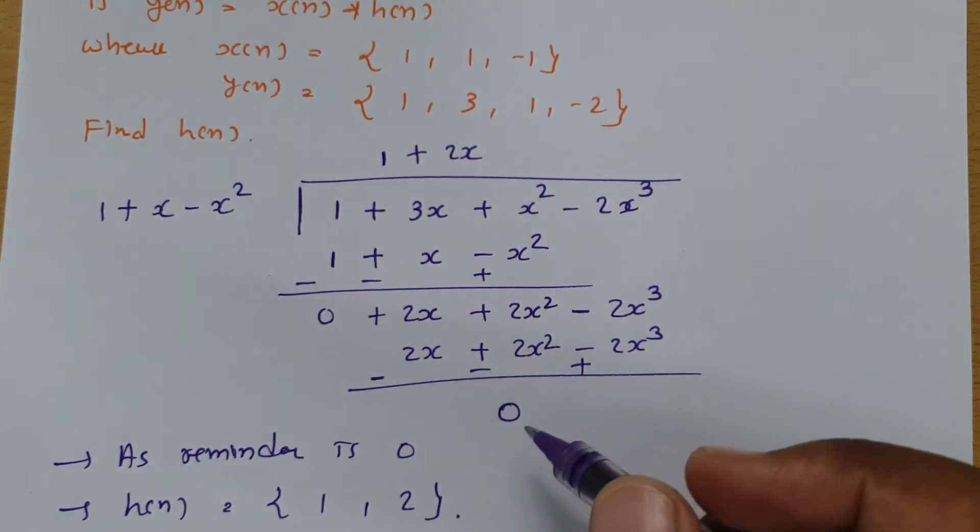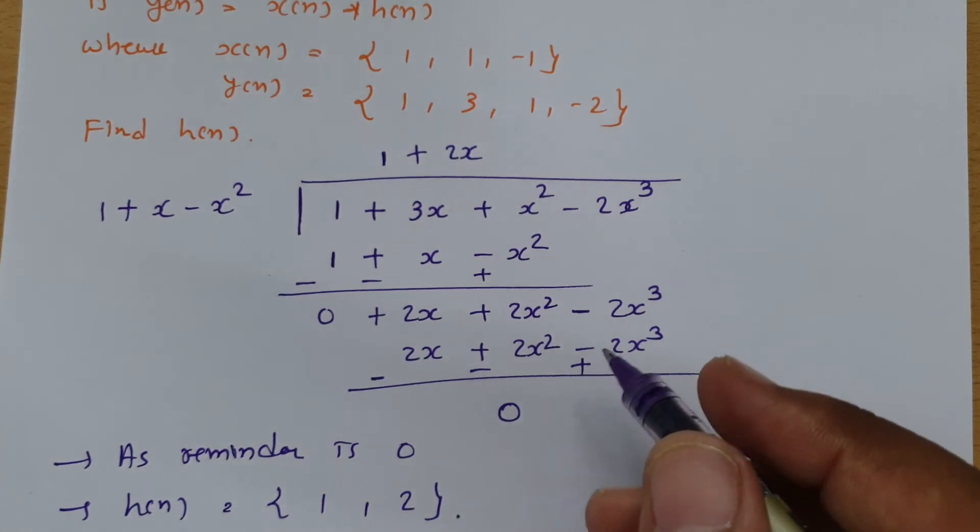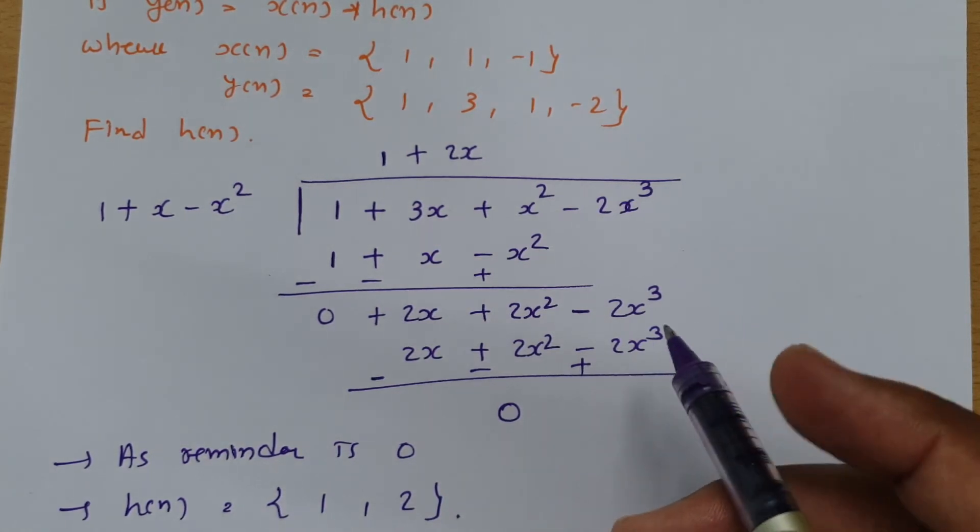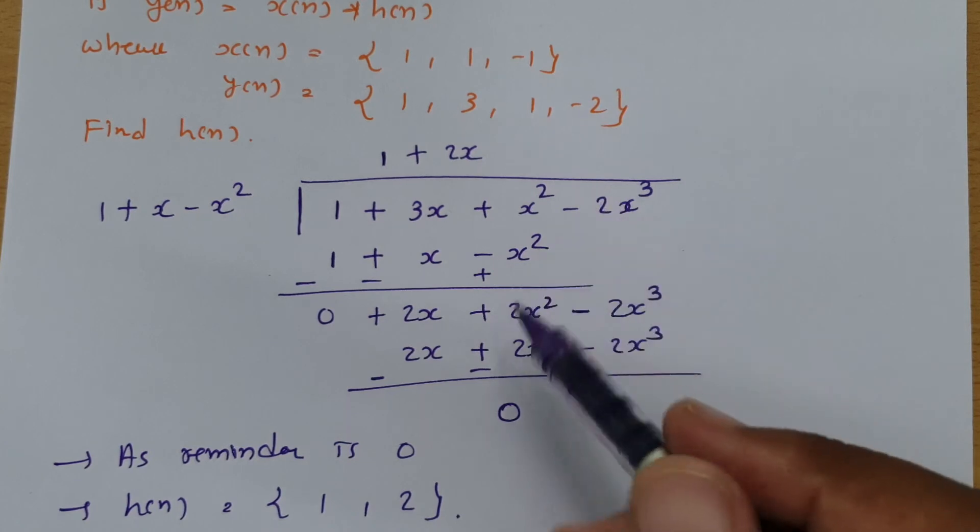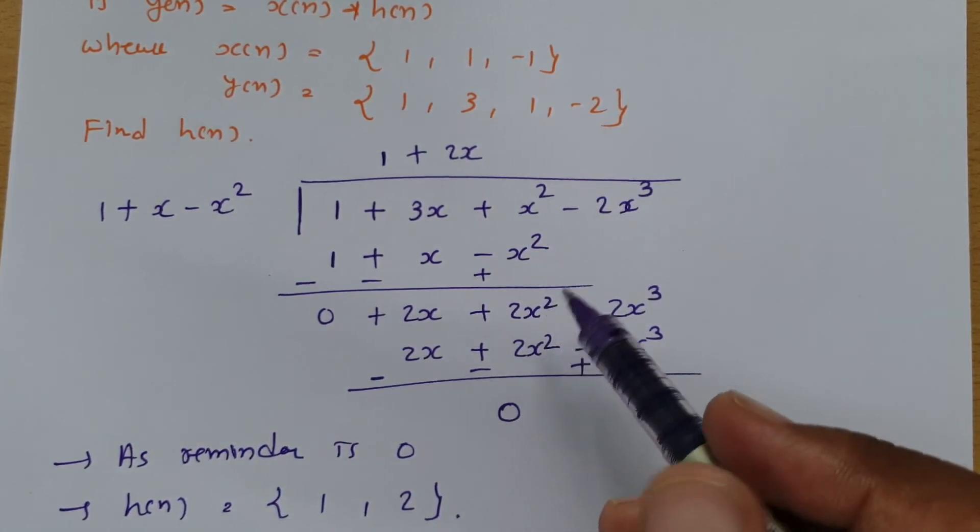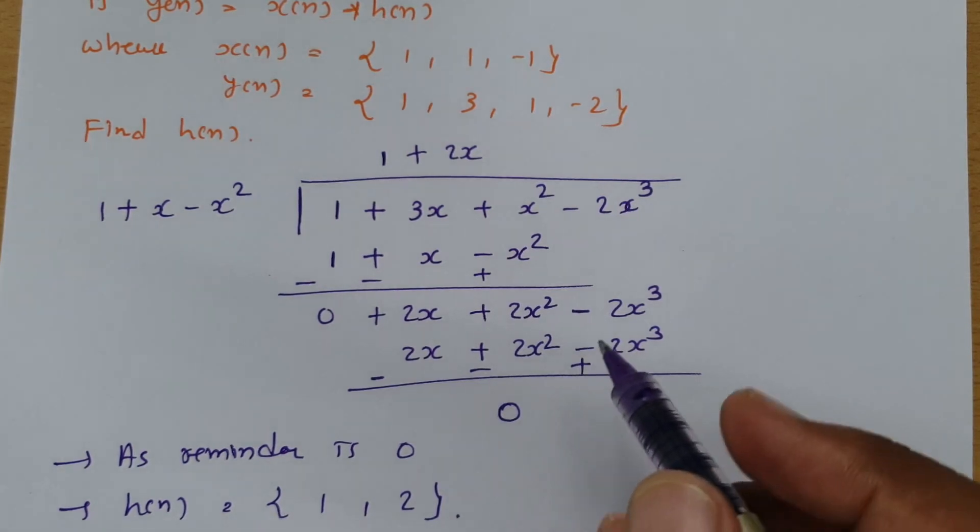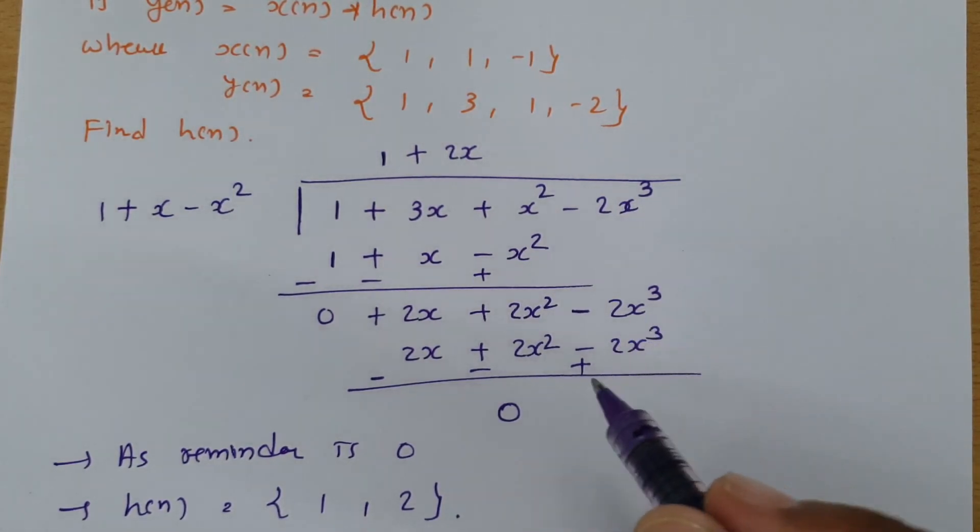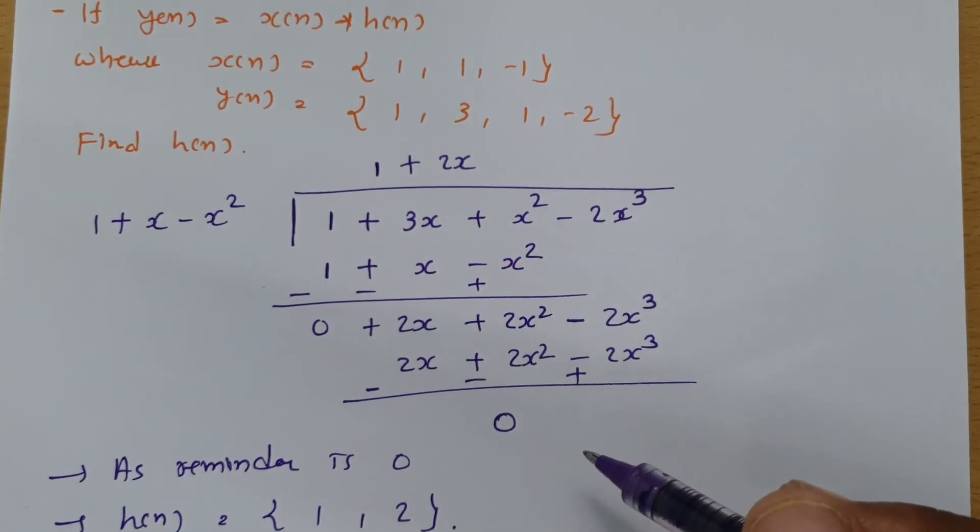In the previous session, I explained one example where deconvolution was invalid. Even if you apply this method to that example, you will find the remainder is something, meaning deconvolution is not possible.